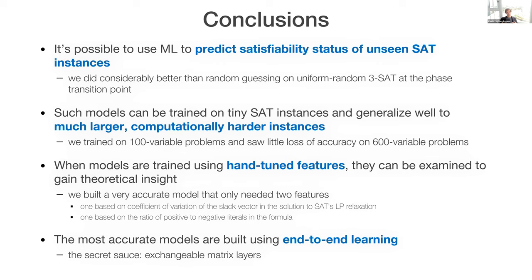So let me leave it there. So I've showed that it's possible to use machine learning to predict satisfiability status of unseen SAT instances considerably better than random guessing on uniform random three SAT. We're able to build models on tiny SAT instances and generalize them well to much larger instances. In particular, we showed that we could train on 100 variable problems and saw little loss of accuracy on 600 variable problems. When we trained using hand-tuned features, we can examine our models to gain theoretical insight. And we were able to build a very accurate model that needed only two features. And we're able to build even more accurate models without any domain knowledge at all using end-to-end learning. And the secret sauce was these exchangeable matrix layers, which I think might be an enabling technology for other SAT work to come. So thanks for your attention.